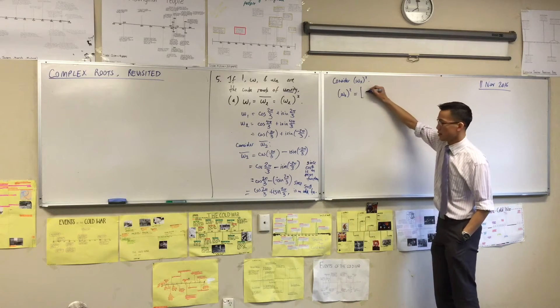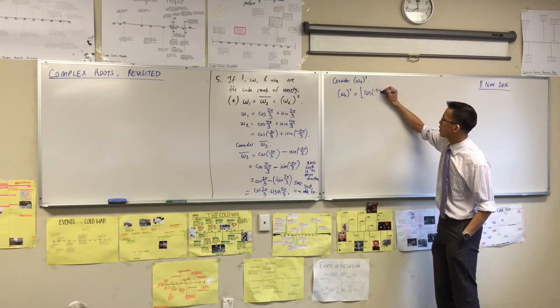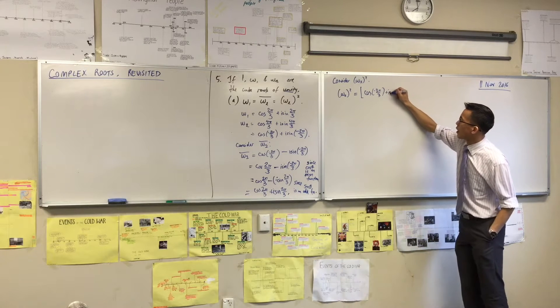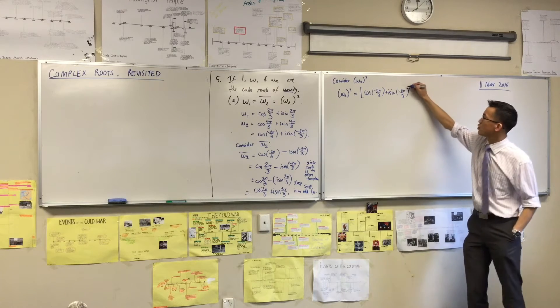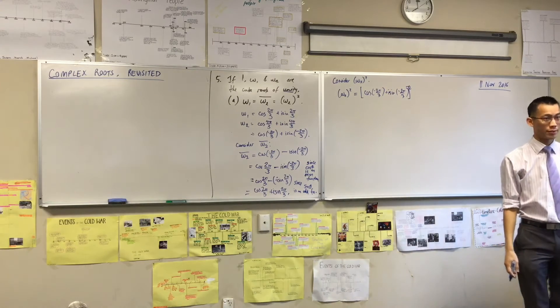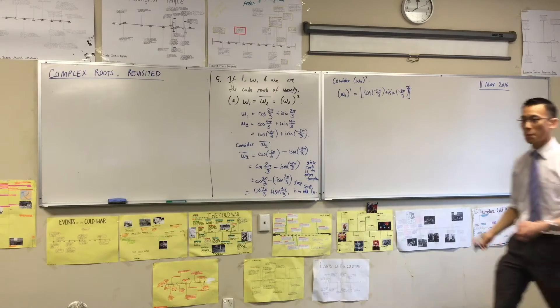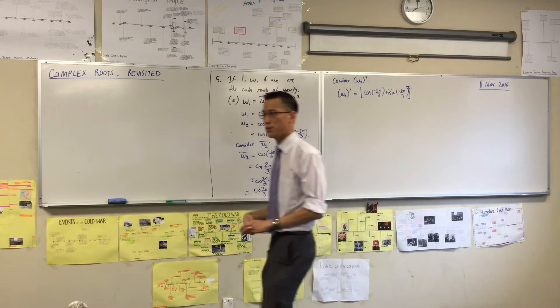So that one there, so that is cos of etc., i sin etc. And this is just a straight substitution, so I'm squaring that whole thing. Now at this point, I have a choice of what to do, right?